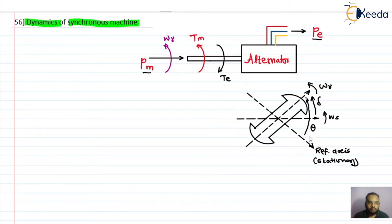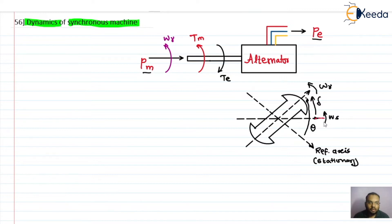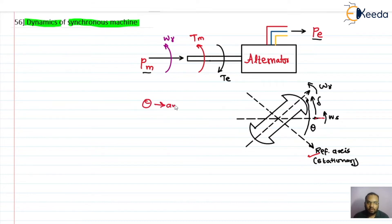Looking at this diagram, this axis is the axis of the armature, also called the axis of the rotating magnetic field. This axis is of rotor rotation, and this is the reference axis — the stationary axis. When we measure the angle of the rotor with respect to this stationary axis, the angle we get is called theta, or angular displacement. The angle between the rotor axis and the armature axis is delta, called the rotor angle.